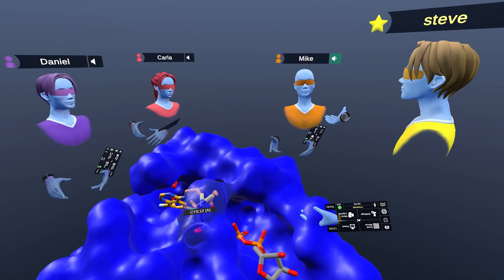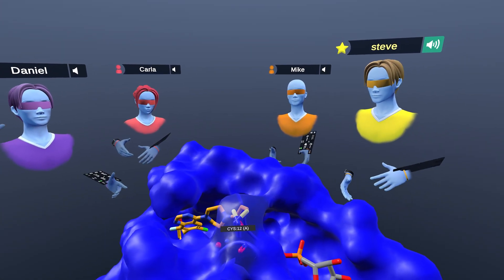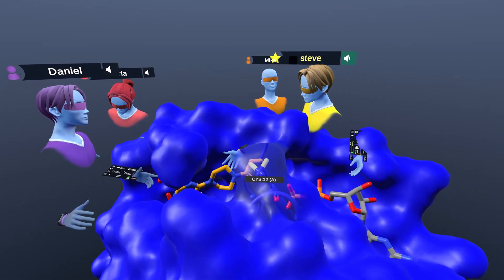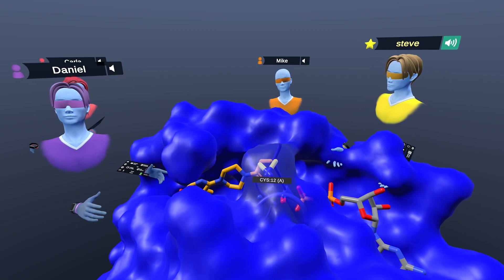So joining us we have our scientists Mike, Carla, and Daniel, and we're going to be exploring the structure of KRAS as well as some very interesting KRAS inhibitors that we can see bound in the pocket right here.